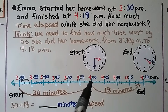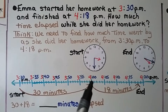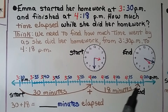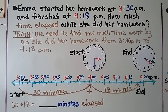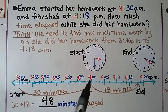Now that we're at 4 o'clock and she finished at 4:18, we just need another 18 minutes, which puts us at 4:18 p.m. We do 30 minutes plus 18 minutes — that would be 48 minutes elapsed. We know 30 minutes is a half an hour, and we just needed 18 more minutes.